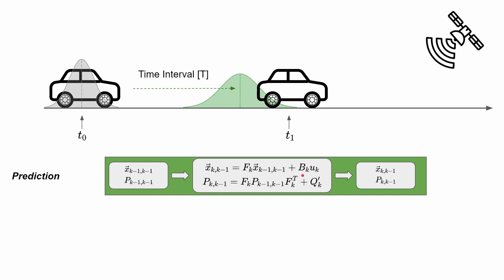The B matrix is the input transition matrix — it maps the effect of the input on each element in the state vector. The second equation is the prediction update for the covariance. The first term is simply the transformation of the previous estimated covariance using the F matrix, which depends on how the previous estimated states are mapped to the new estimated state — a transformation similar to the state equation.